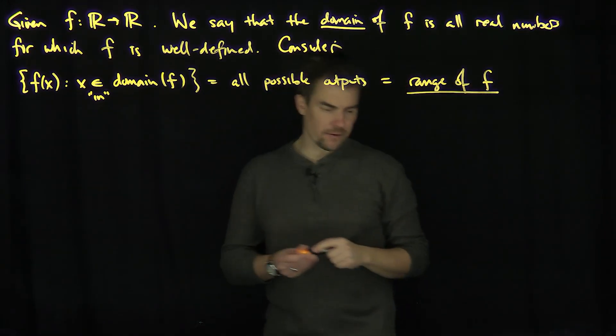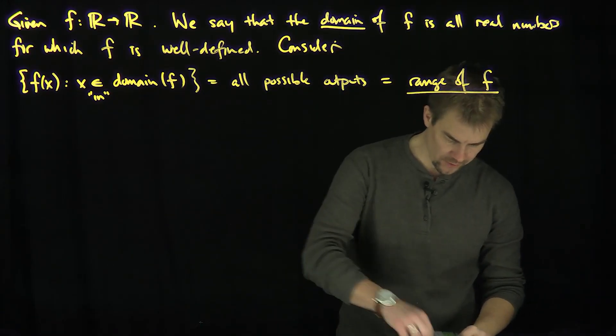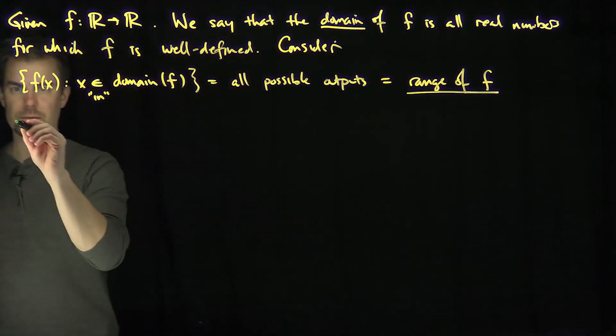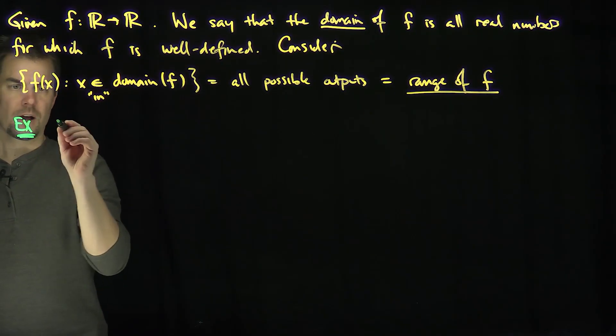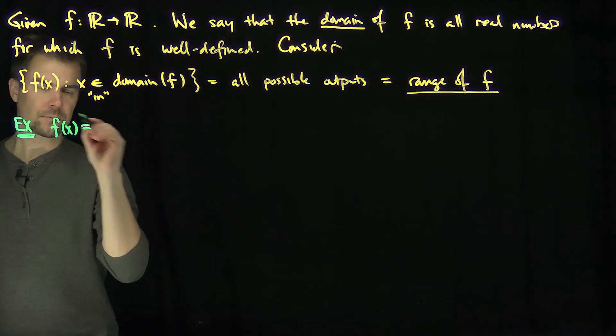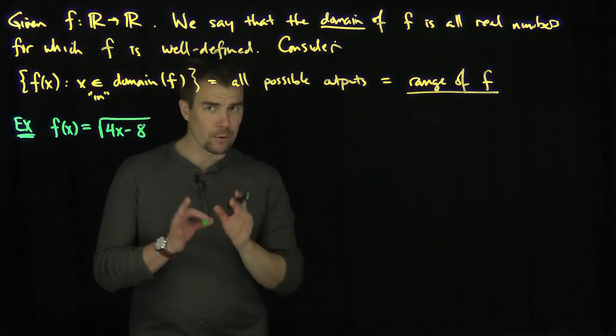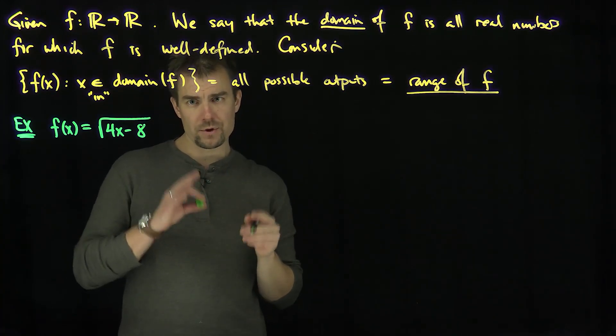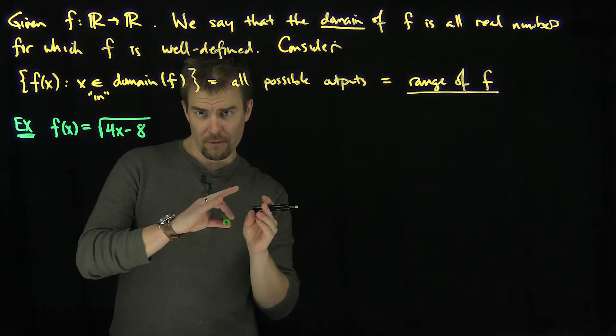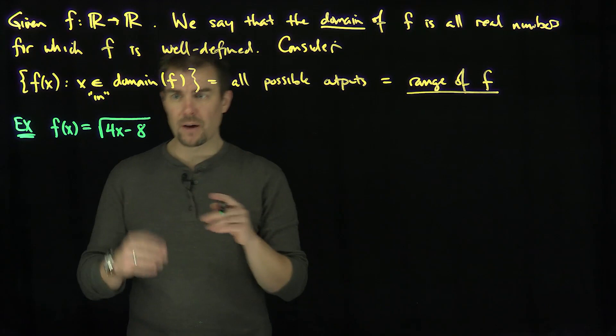So let's see an example of computing the range of f and the domain of f. I'm going to look at f(x) which is the square root of 4x minus 8. Now we recall that we can only plug in numbers to a square root which are either 0 itself or a positive number.